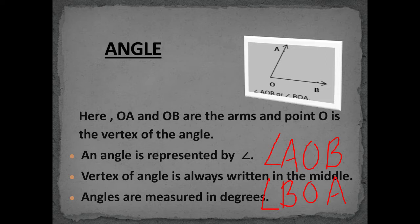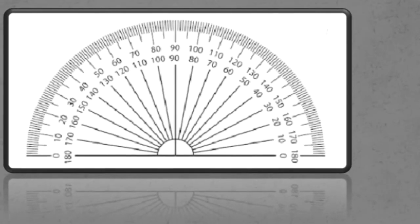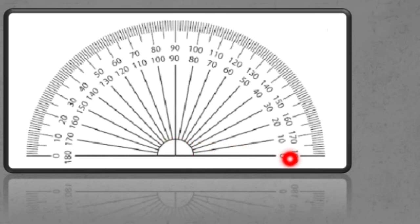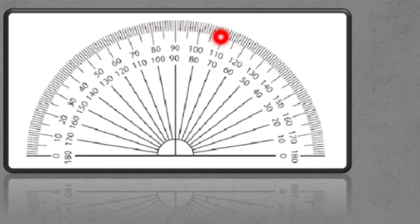Angles are measured in degrees, and we use a protractor to measure them. Looking at this protractor, this represents the baseline. We have 0 degrees, 10 degrees, and so on. Here we have 90 degrees, and then 180 degrees — this is the inner scale. Similarly, there is an outer scale on the protractor where we also have 0 degrees, 10 degrees, continuing to 90 degrees and then 180 degrees.